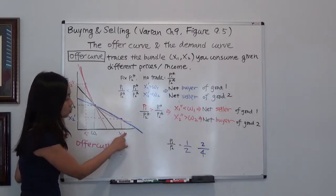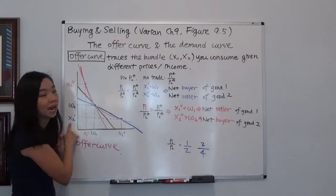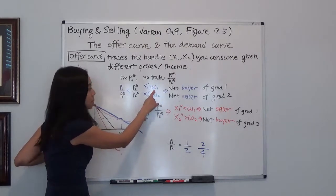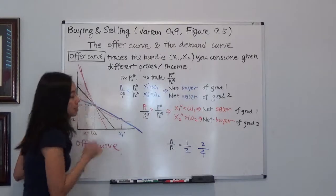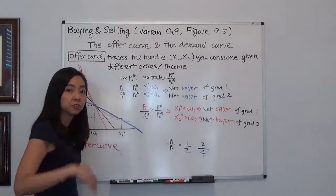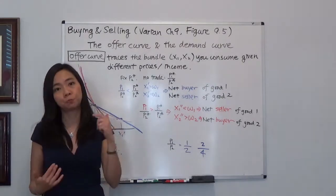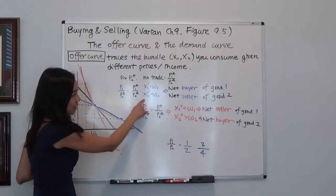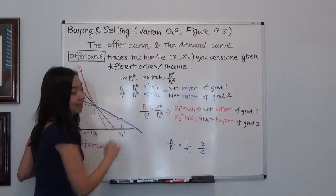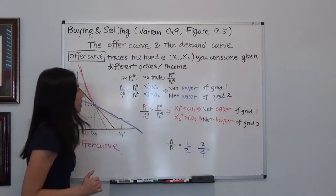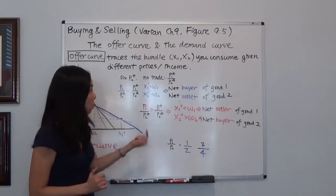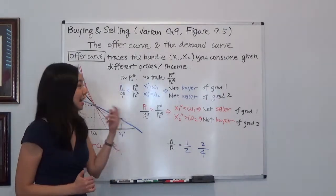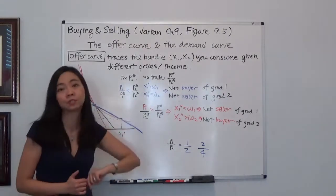So your new bundle is X1 prime and X2 prime. Notice that your X1 prime is higher than your omega 1, meaning you're a net buyer of good 1, because the price of good 1 has gone down so it makes sense to buy more. At the same time your consumption bundle has less X2, so your X2 is less than omega 2, meaning you're selling your good 2. Why? Because the price of good 2 is relatively higher than before.